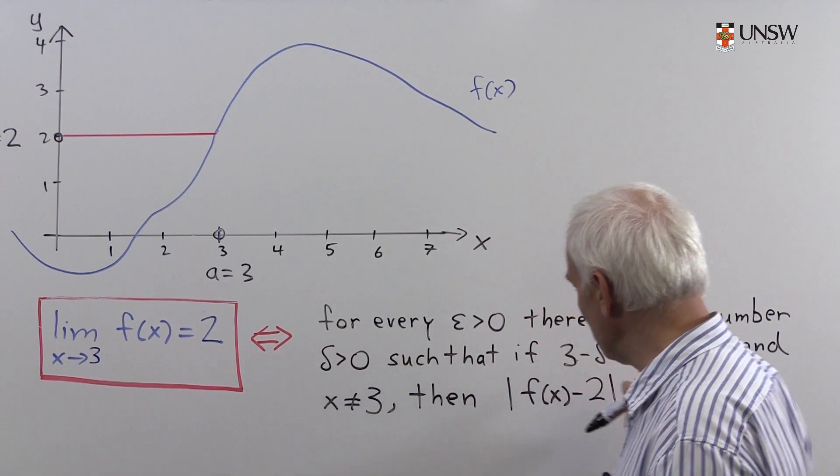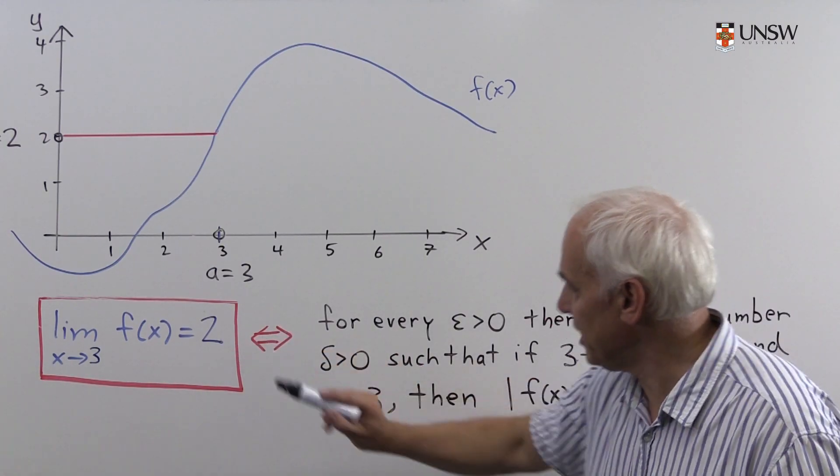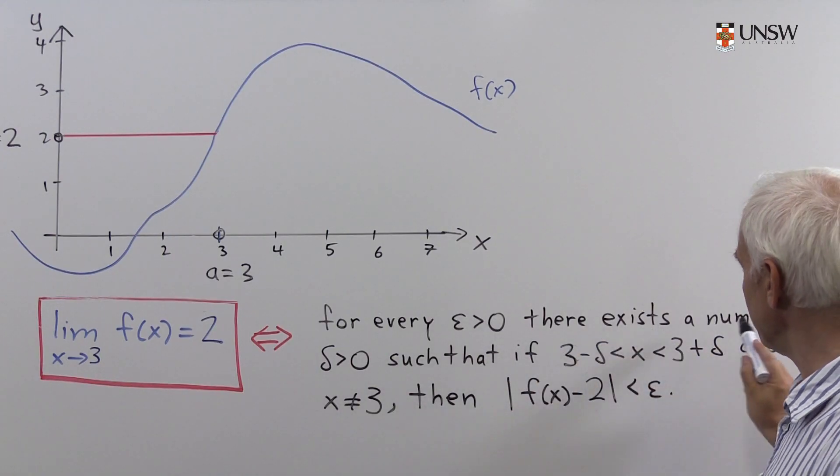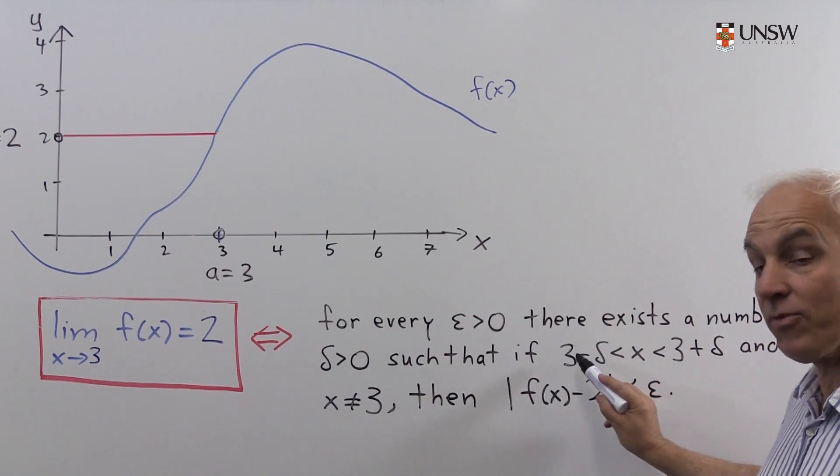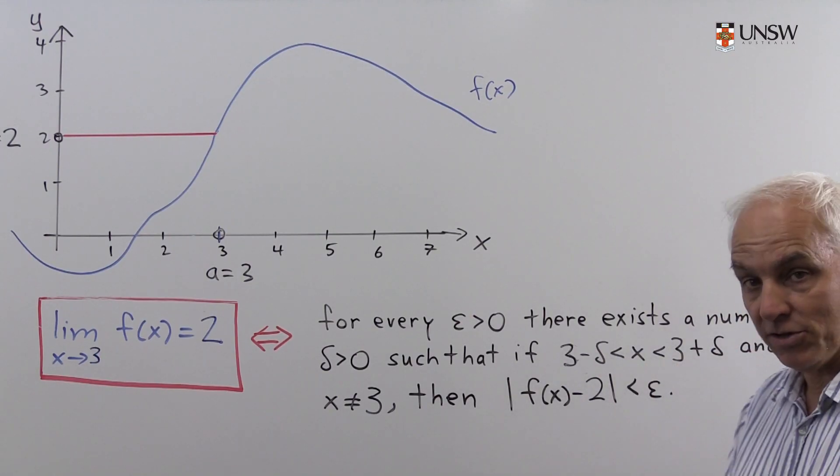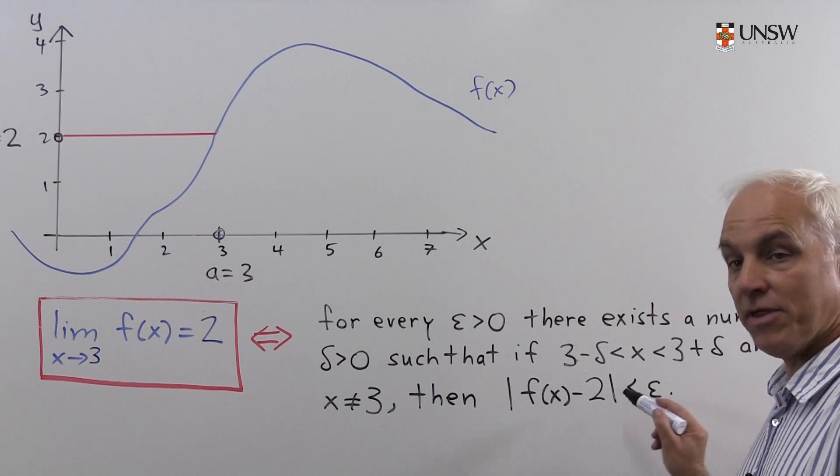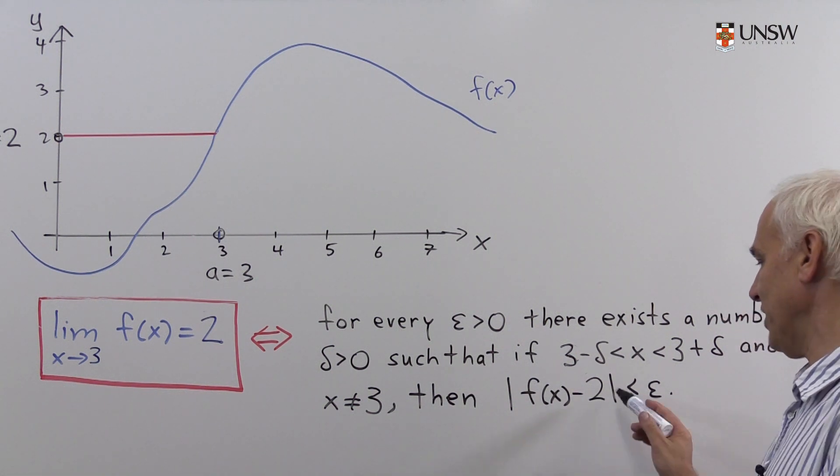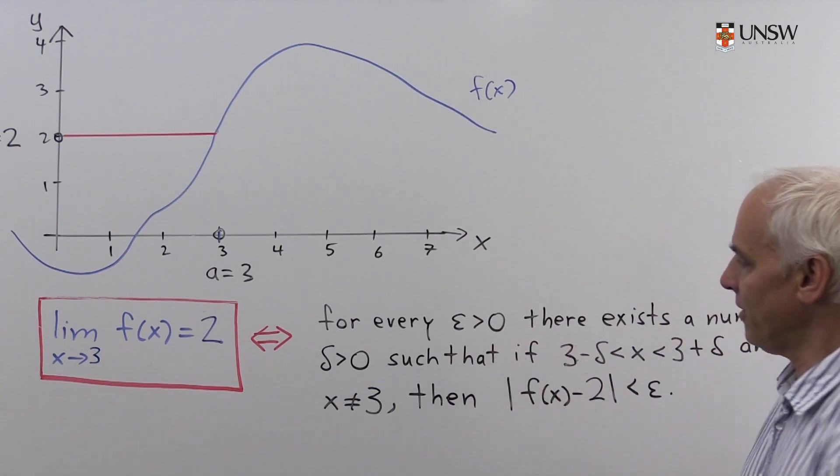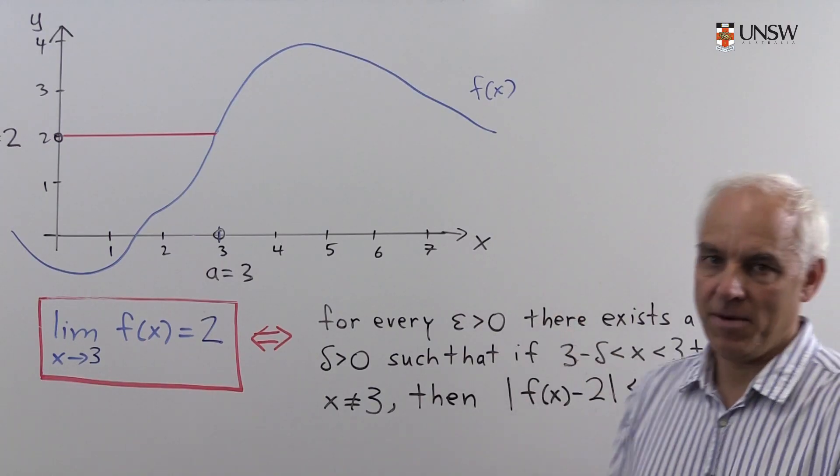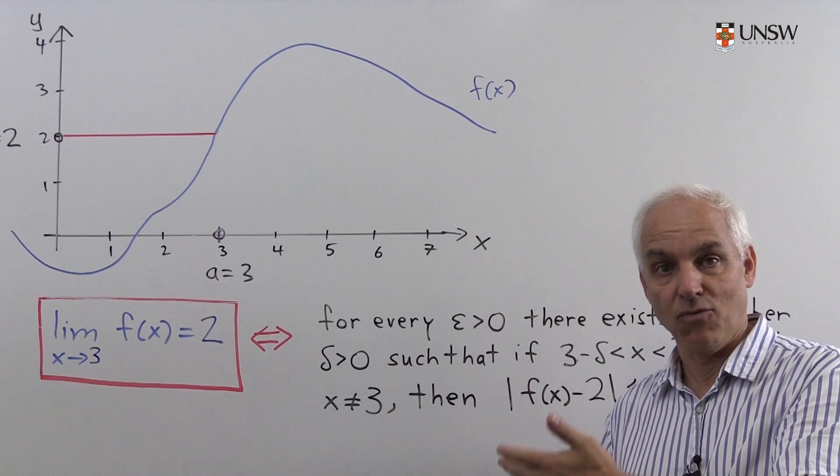And here is the same definition that we had before, but now in the context of this particular example. This means that for every epsilon greater than 0 there exists a number delta greater than 0, such that if x is between 3 minus delta and 3 plus delta, and x is not equal to 3, then f of x is within epsilon of 2, or the absolute value of f of x minus 2 is less than epsilon. So let's try to illustrate this in this diagram. Basically we have to show that for every epsilon there is a delta. Let's do them sort of one epsilon at a time.